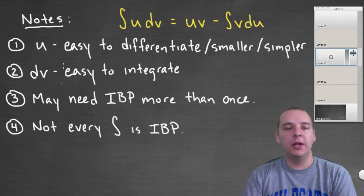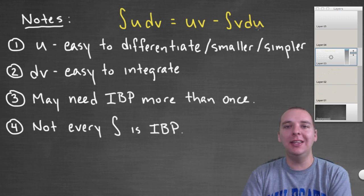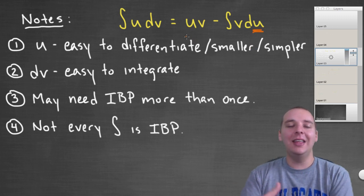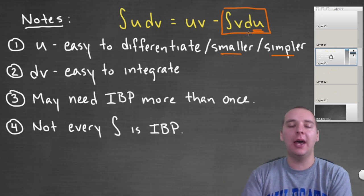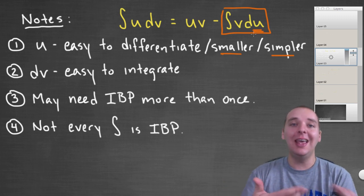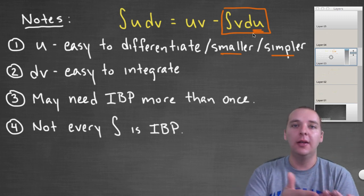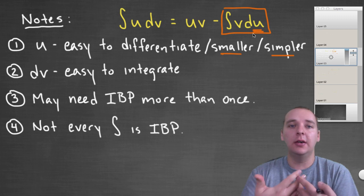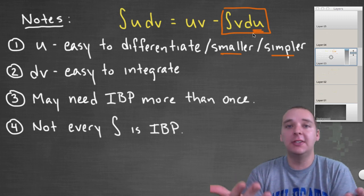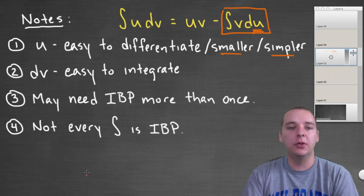I just made up a list of quick little notes here. u should be easy to differentiate because you're going to need du. And if possible, we would like it to also get smaller or simpler so that this integral on the end isn't so bad. That's why I chose u to be x, because the derivative of x is one, which got smaller or simpler, and I didn't choose e to the x because the derivative of e to the x just stays e to the x. So that was my driving force behind the last example.